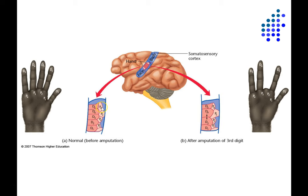If you zoom in, you can see that there are individual areas of somatosensory cortex that represent each of the digits. They get touch input from each of these digits and also from the adjacent palm areas. So not only is there an area of the brain devoted to touch of the hand, but there are individual sub-areas that represent each of the digits. The figure shows the borders between these areas as being crisp, but that's not really the case — the borders are a bit fuzzy.